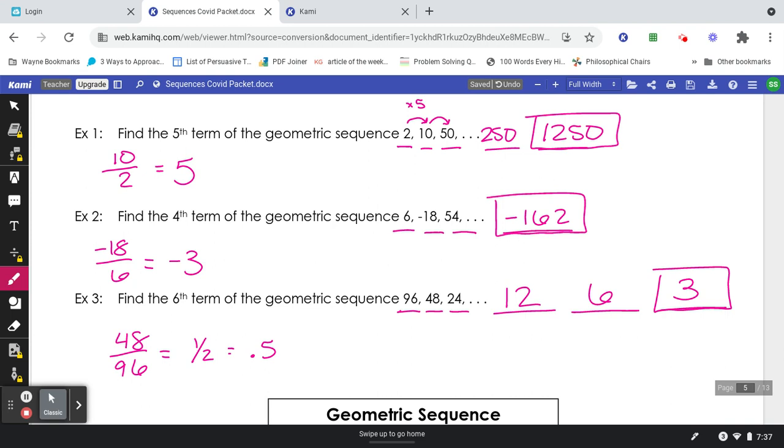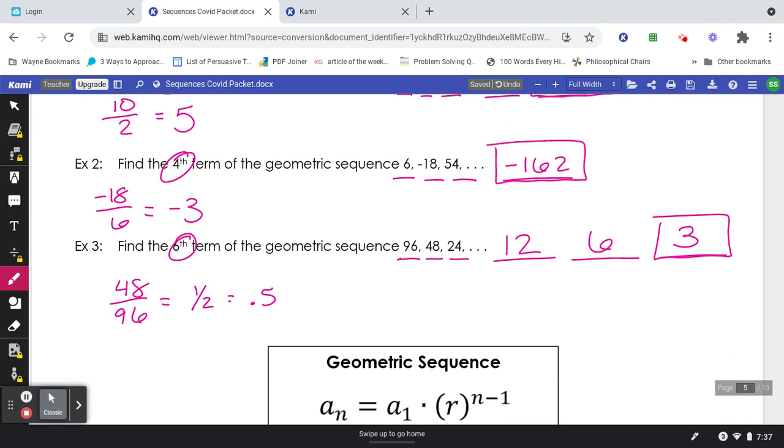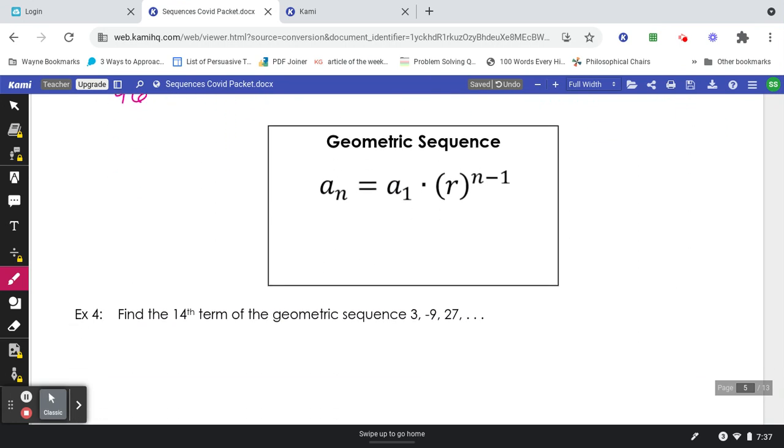Notice how each of those were pretty small terms. The fifth term, the fourth term, the sixth term. So I could pretty easily make a list. When we get down into these bottom ones, if the numbers start to get a little bit bigger here, it's often easier to use the formula.